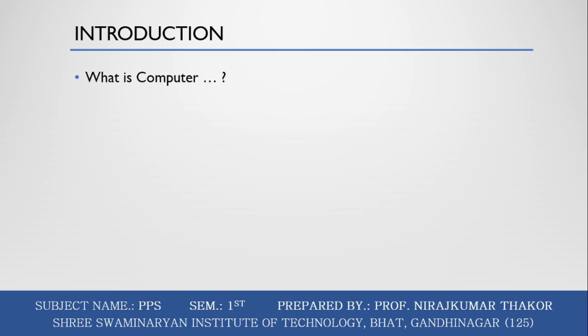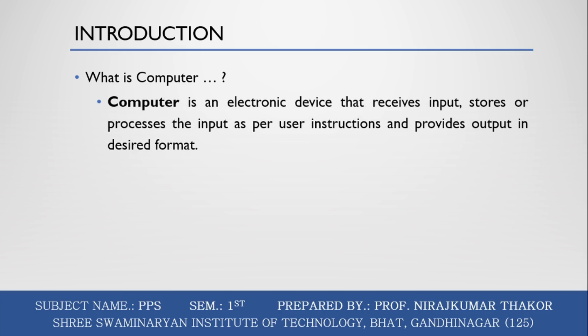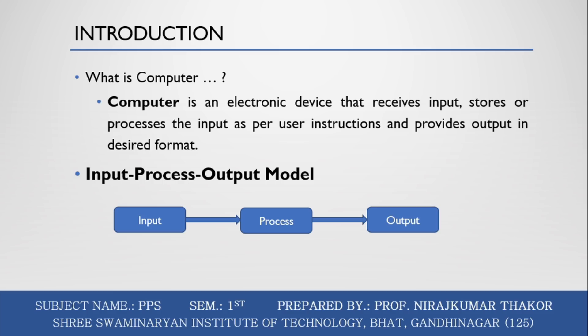What is a Computer? The computer is an electronic device that receives input, stores or processes the input as per user instruction, and provides the output in the desired format. This is the input-output model. The computer input is called data, and the output obtained after processing based on user instructions is called information. Raw facts and figures which can be processed using arithmetic and logical operations to obtain information are called data.